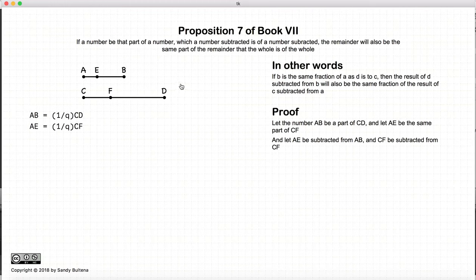So how do we prove this? Well first, let's take two numbers, ab and cd, and let ab be a fraction or a part of cd, and let ae be the same fraction of cf. So these are our starting conditions.